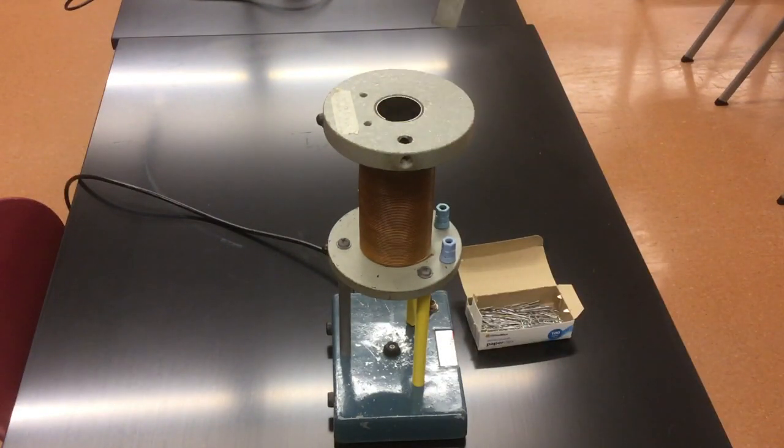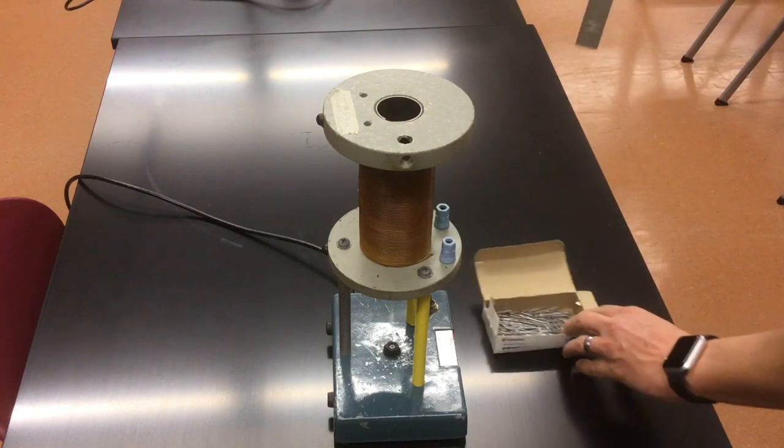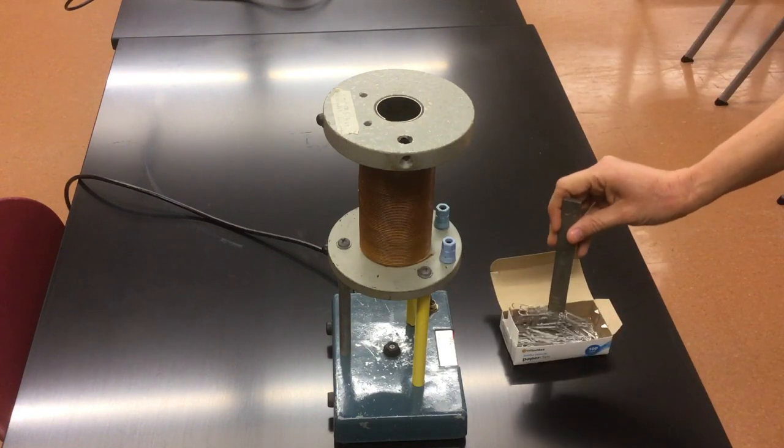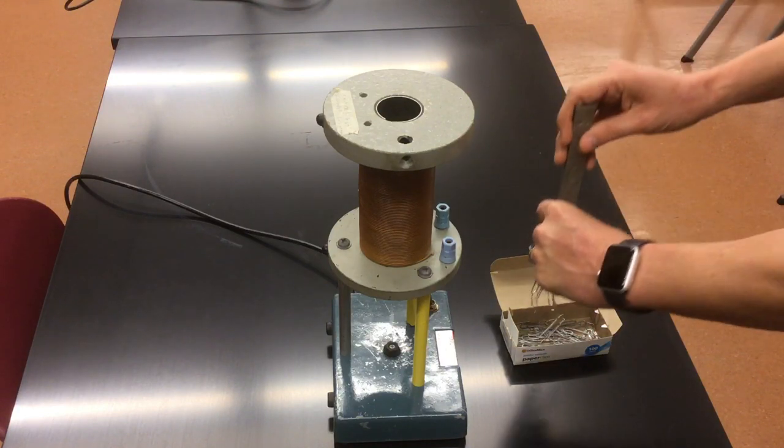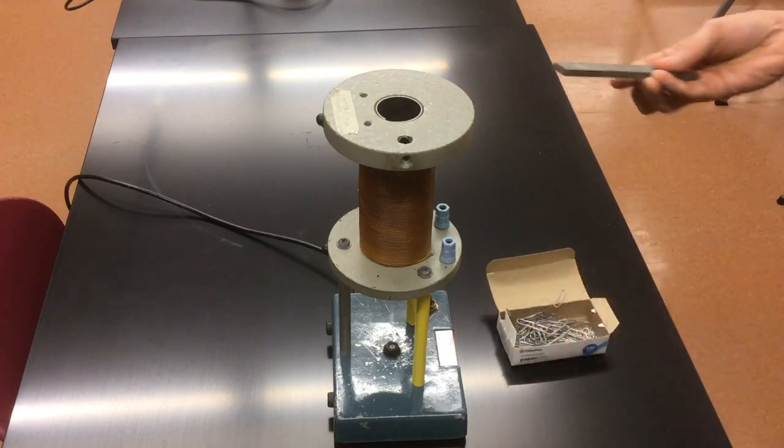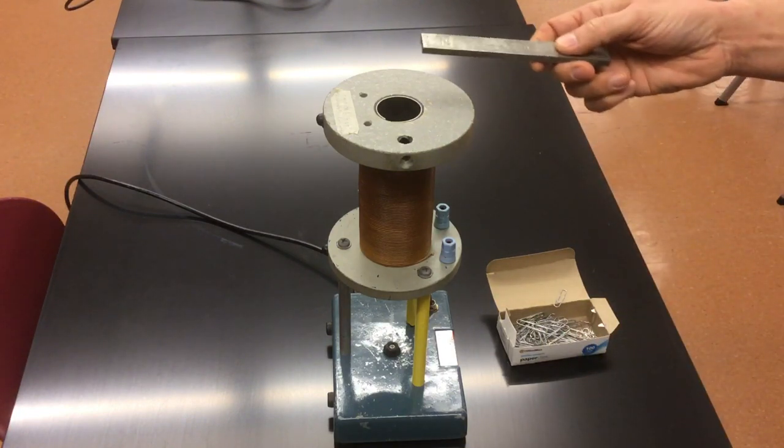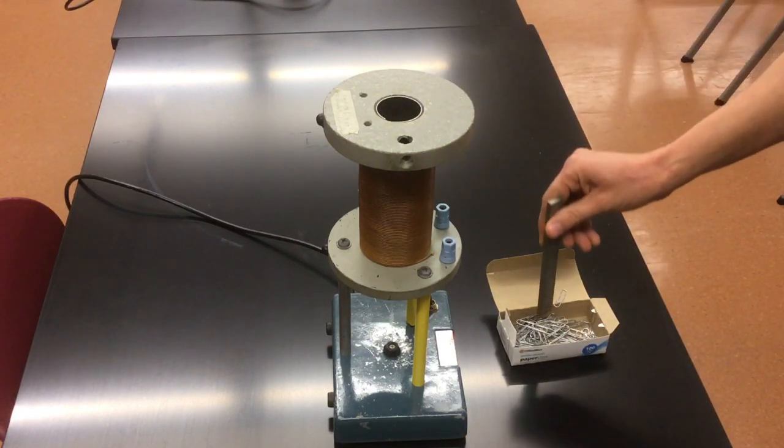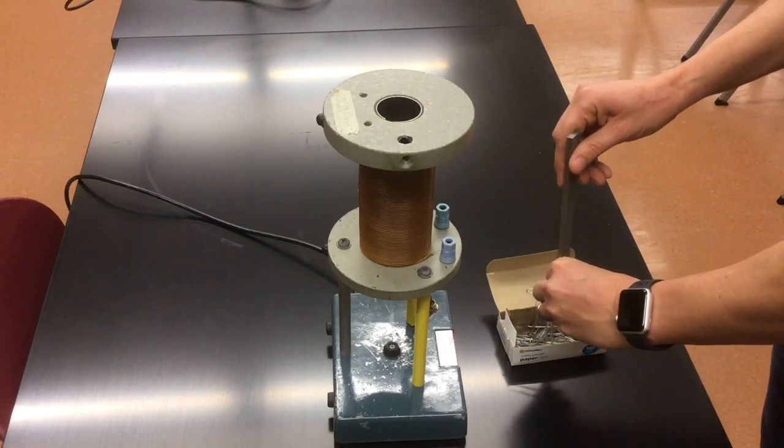I hold it there for a little while and I've encouraged the magnetic domains to align and now when I bring it near the paper clips, it indeed has retained that magnetism. If I drop it, the magnetic domains fall slightly out of alignment. It still picks them up, but it's not as strong of a magnet anymore.